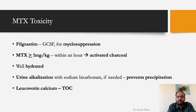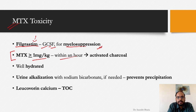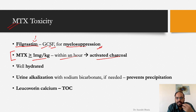For methotrexate toxicity: filgrastim (G-CSF) is given for myelosuppression to increase cell counts. If methotrexate intake exceeded 1 mg per kg within the last hours, give activated charcoal to prevent further oral absorption into the bloodstream.